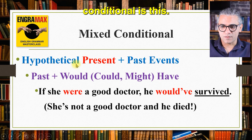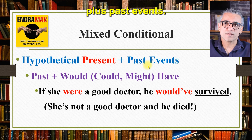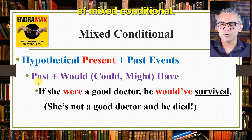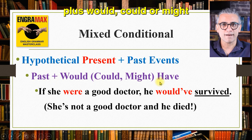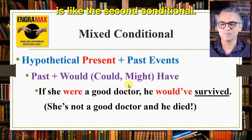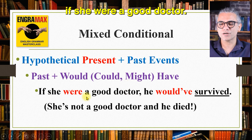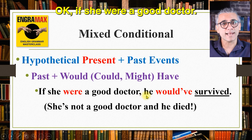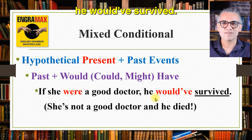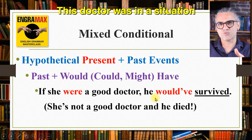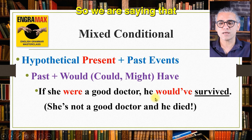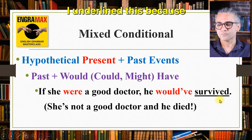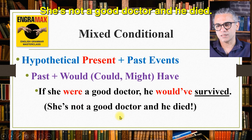Another form of mixed conditional is a hypothetical present situation plus past events — the other way around. The condition uses past — like the second conditional — and the consequence uses would/could/might have — like the third conditional. Example: if she were a good doctor — meaning she is not a good doctor, present situation — he would have survived. Because she is not a good doctor, in a past situation somebody died. So 'would have survived' — 'survived' is in past participle form. She is not a good doctor and he died.